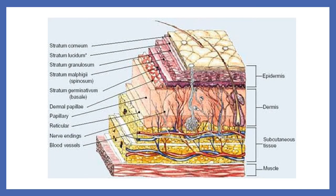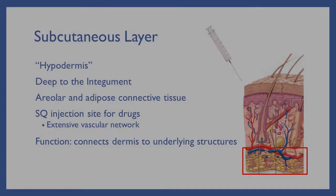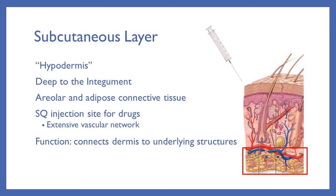Here's another view of the skin showing the epidermis, dermis, hypodermis, and the muscle layer below. The deepest part is the subcutaneous layer, or hypodermis. This is technically deep to the integument and not part of it. It's composed of areolar and adipose connective tissue, and it's an excellent site for subcutaneous injections of drugs because of its extensive vascular network.